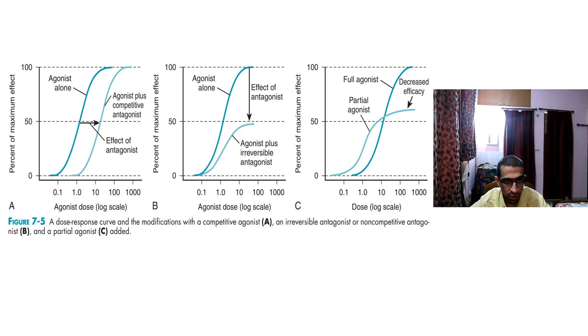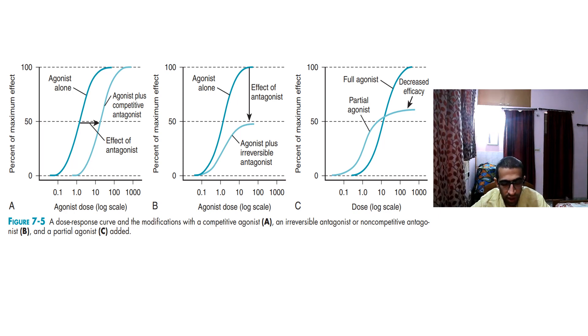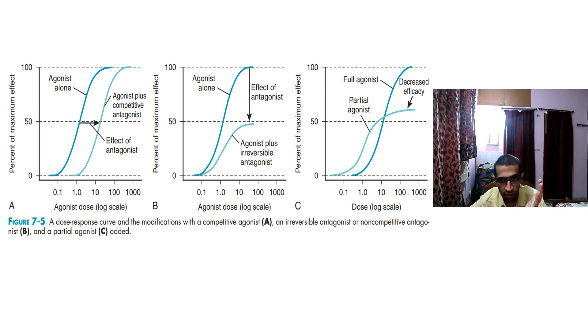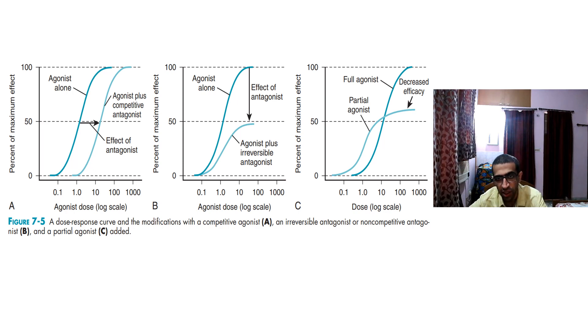Diazepam is basically a calming drug — it is a sedative. A sedative is a drug which calms; a hypnotic is a drug which puts you to sleep. Now, looking at this very important diagram: a rightward shift of the dose-response curve means potency has decreased — you have to give the agonist at a higher dose.